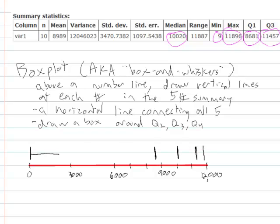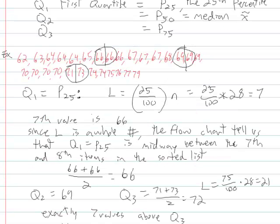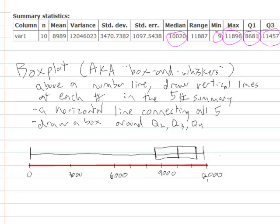We draw our horizontal line, connecting all five of these. We draw a box. Really, we just close the box. And we have a box and whisker plot. Now, what this allows us to see, as I said, it gives us a visualization of the distribution.